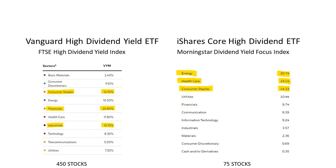When looking at an ETF, we always look for the underlying index to examine the mechanics of the portfolio. For Vanguard, you have the FTSE High Dividend Yield Index — heavily weighted to financials at 20%, then staples and industrials, which are traditionally where you find more dividend aristocrats. It has 450 stocks. Contrast that to the iShares High Dividend ETF, which utilizes the Morningstar Dividend Yield Focus Index, with energy at close to 21%, healthcare close to 20%, consumer staples at 14% — but only 75 stocks. A dramatic difference between these two ETFs.